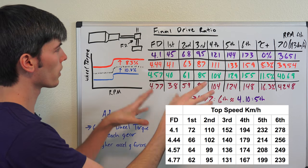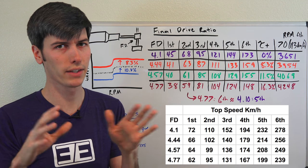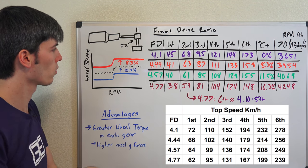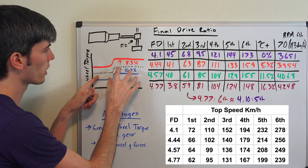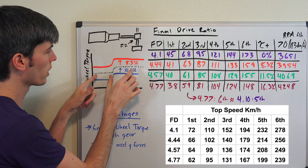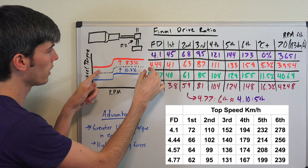Now remember by changing the final drive ratio we're not changing the power or torque of the engine at all. We're just changing the gearing and therefore influencing the wheel torque. So if you change the gearing to a more aggressive gearing from a 4.1 to a 4.44, you're going to boost that wheel torque curve in whichever gear you're in.